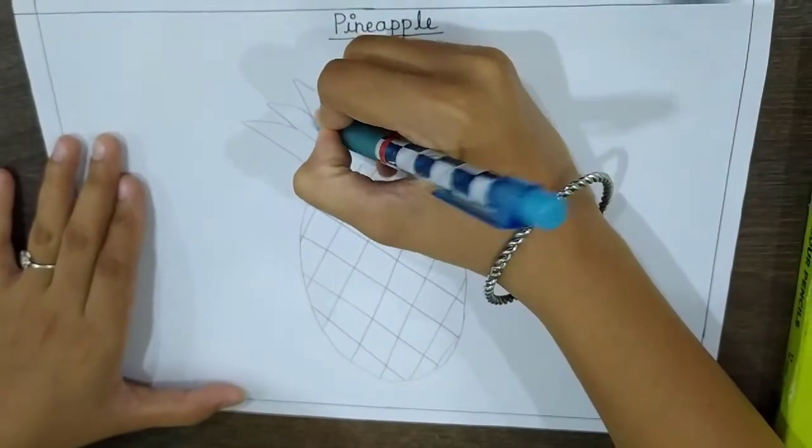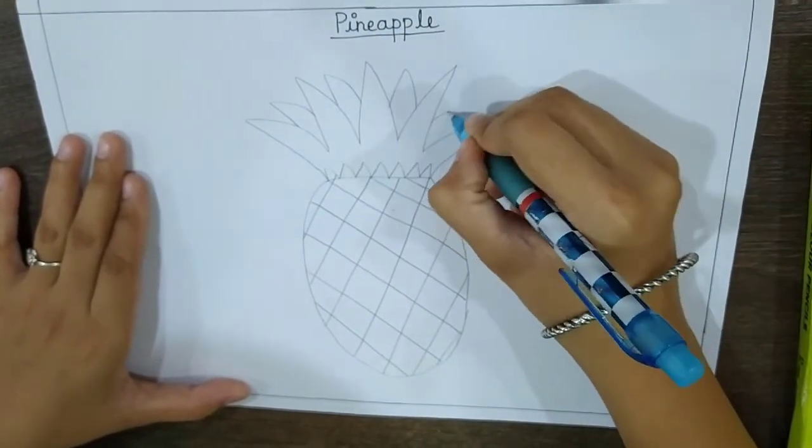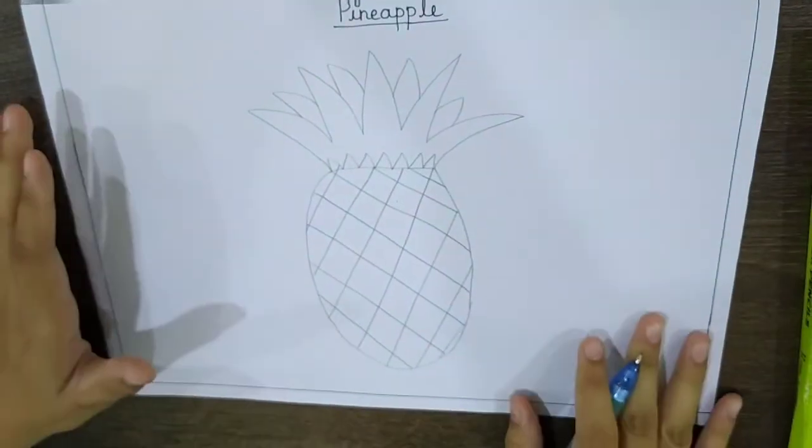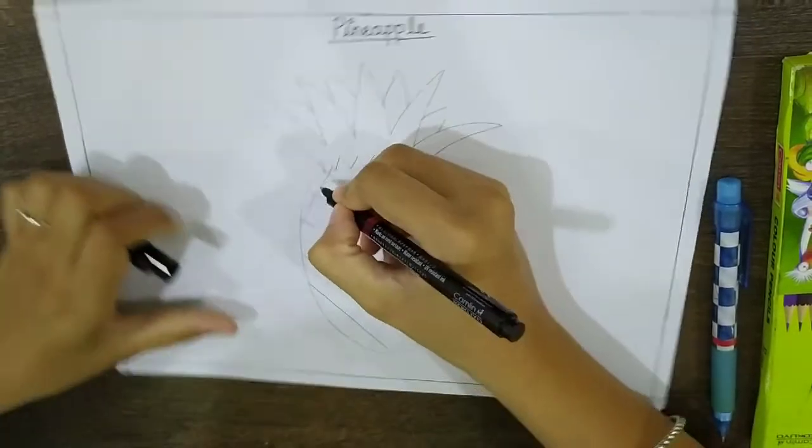I will draw one more. Over here. Okay, now let's color this. But for that, first I will outline it.